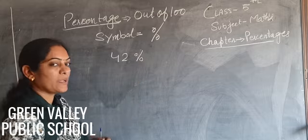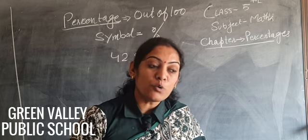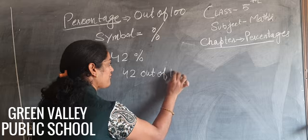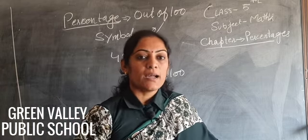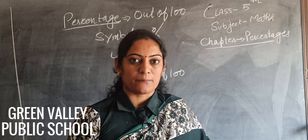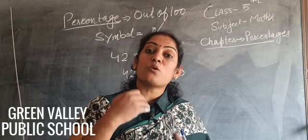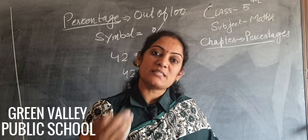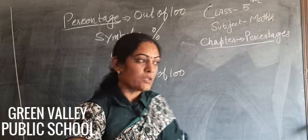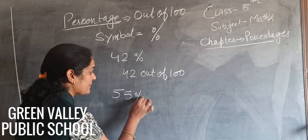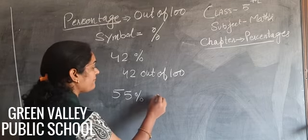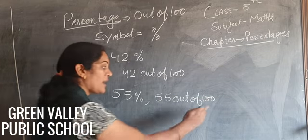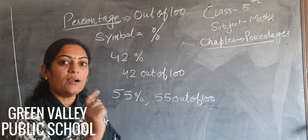Out of hundred, we sign it in symbolic form. Our percentage symbol — for example, 42 percent means 42 out of 100. If you score 42 marks out of 100 in math, then your percentage in math is 42%. So if you say you have 55%, that means 55 out of 100 — you have 55 parts of the 100.